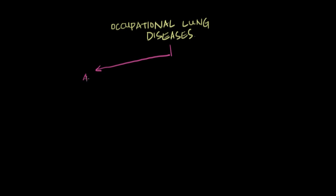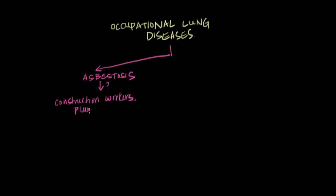The first type of occupational lung disease is asbestosis, which is caused by asbestos exposure. The exposure can occur in construction, in plumbers, and also in shipyard workers — people who work on ships or in the Navy. Those are some of the fields in which you can be exposed to asbestos and wind up with asbestosis.